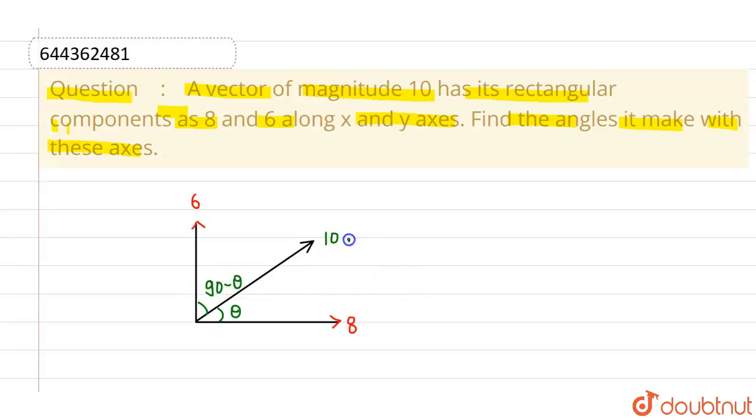Now, the component along the x-axis of this particular vector will be given by 10 cos theta, and that is given as 8 units. So from here I will be getting cos theta equals 4 by 5. That means theta is nothing but 37 degrees. Now this is the angle made with the x-axis.